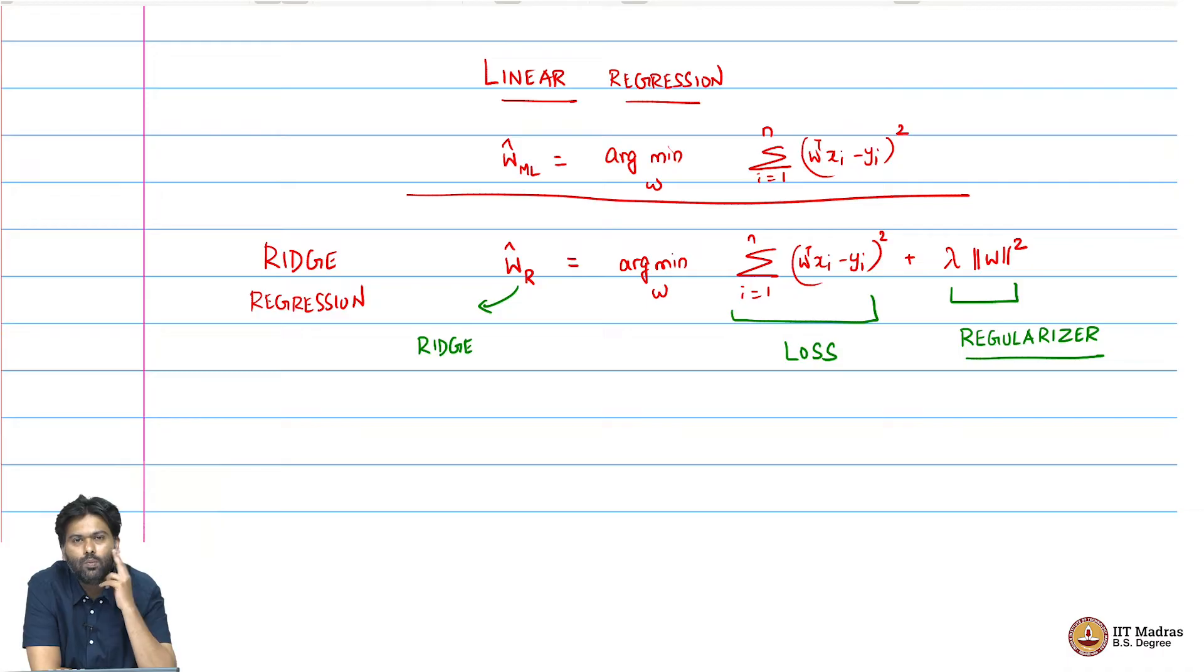One way to think about this is that the second term, which comes from the prior, lambda times norm w squared, is trying to pull our w, the answer, towards 0. It's trying to make the components of w as small as possible. You are penalizing the length, the norm w square, which is the length of w itself.